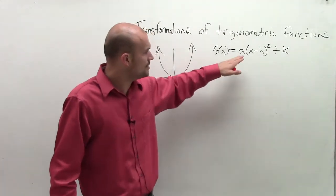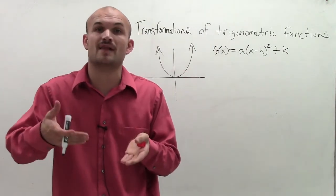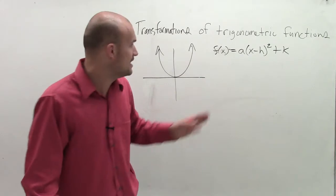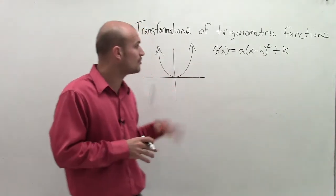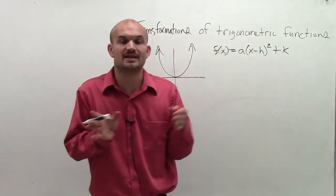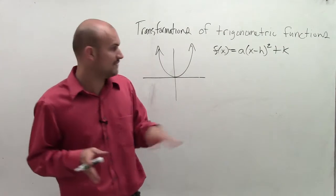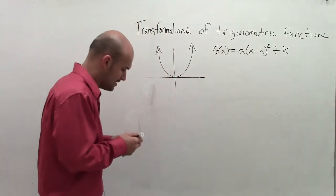So what you looked at, remember a - a told you if it was going to reflect about the x or y-axis, and also a talked about our vertical and horizontal stretch of the parabola. h told us about the shifting left or right of the graph, as well as k told us how to shift up or down on a graph.